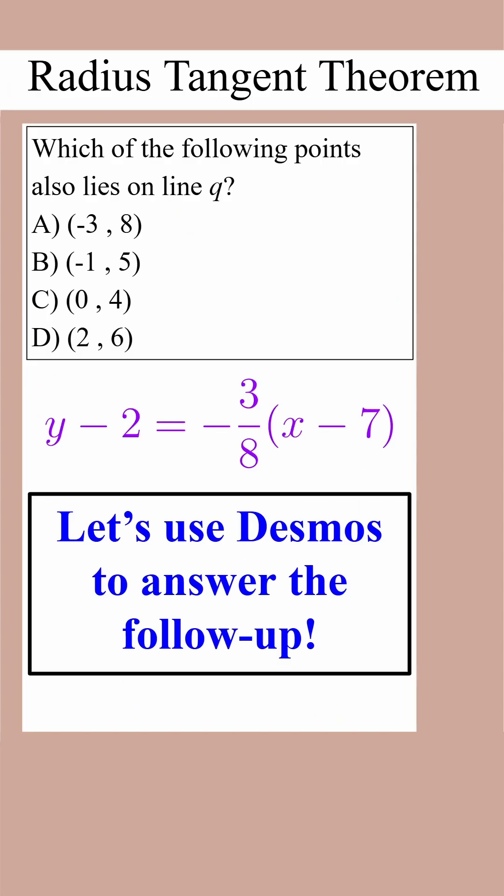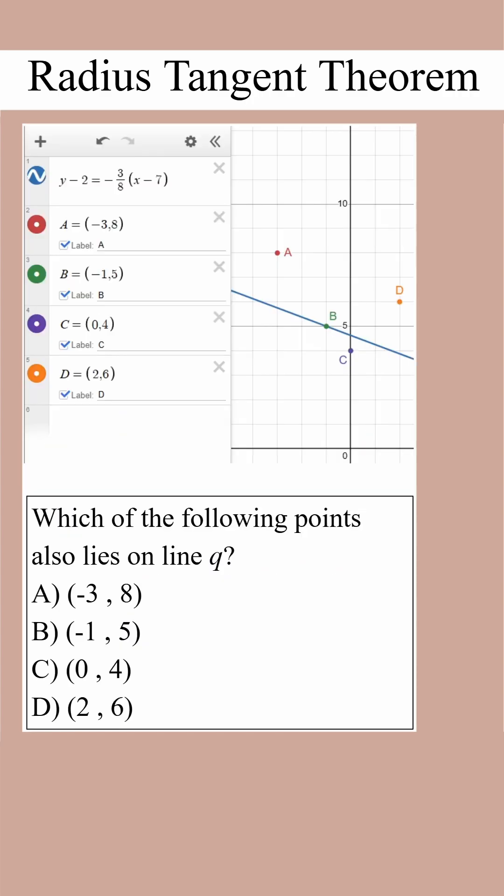Now that we have the equation of the tangent line, we can use Desmos to answer a follow-up question like this one on screen. We can tell from our picture that only line B lies on the tangent line, so B must be the answer to the follow-up question.